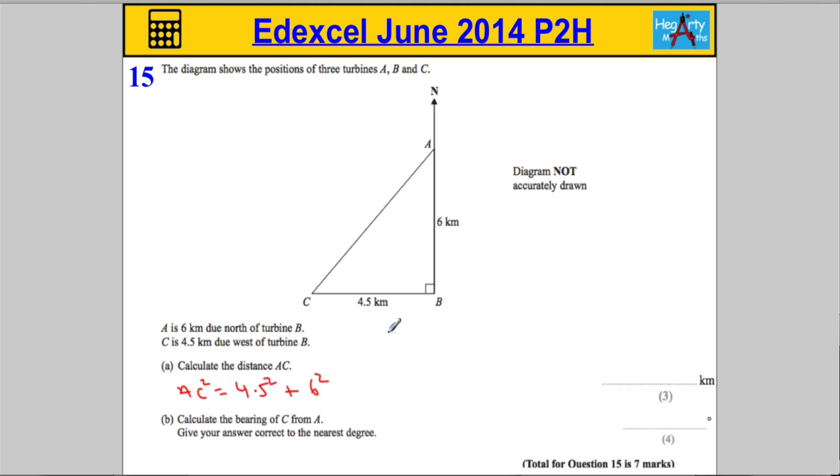So, that means that AC must be found by taking the square root of 4.5 squared plus 6 squared.